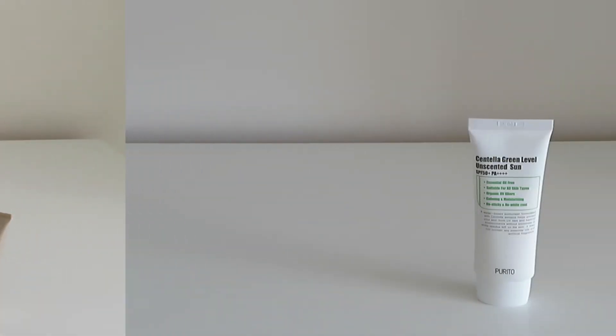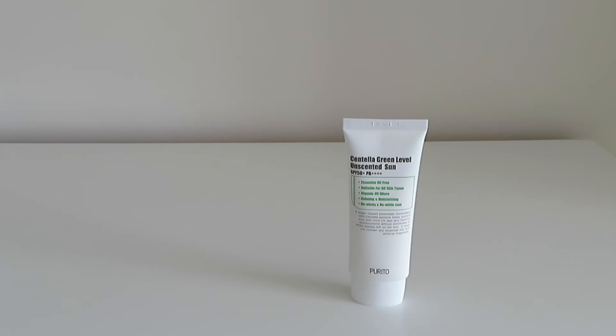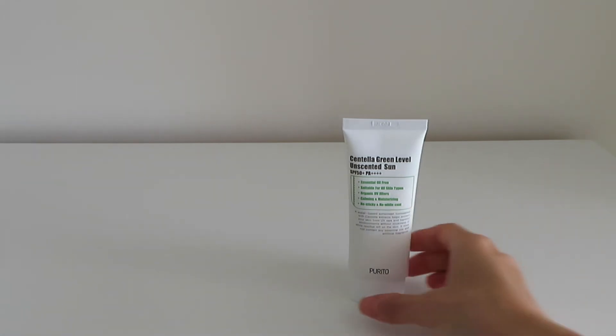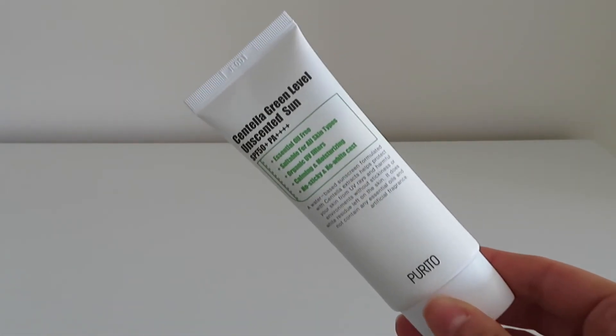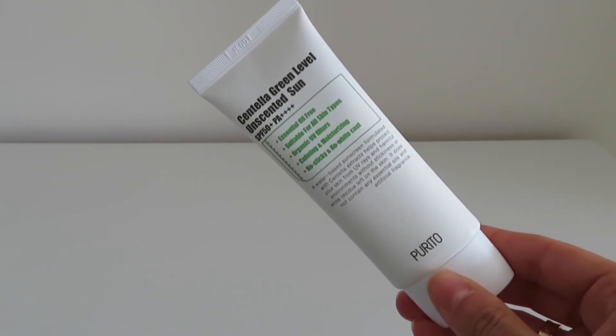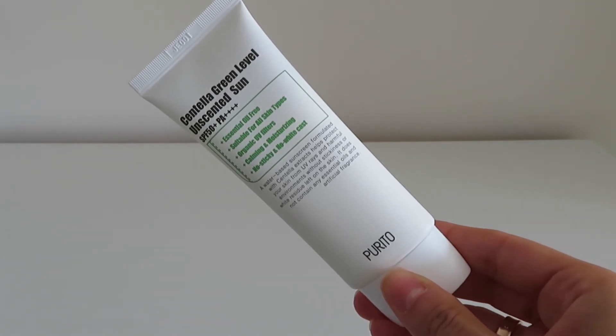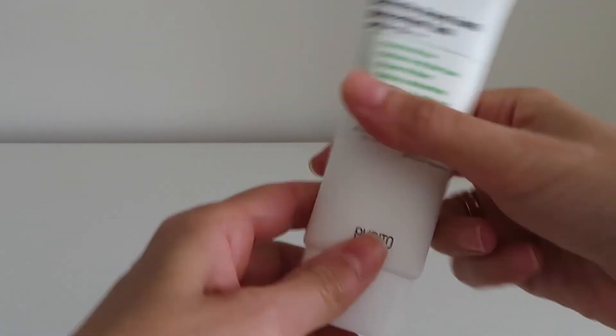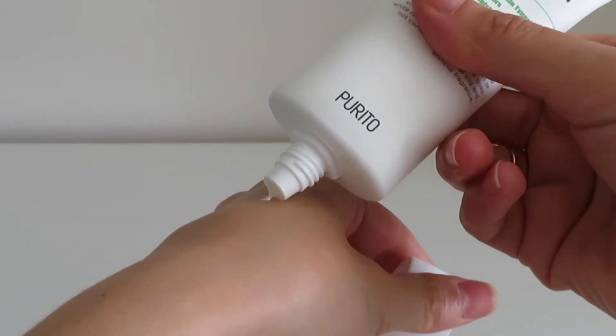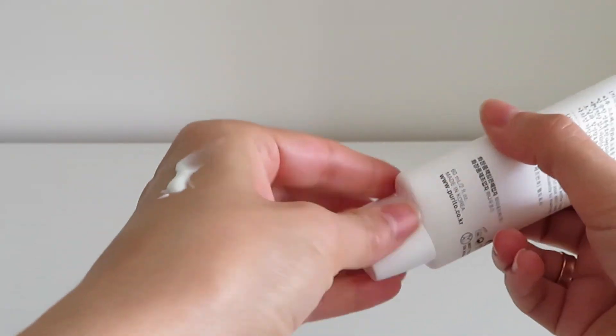And the last one is my favorite sunscreen. It's from Purito Centella Green Level Unscented Sun SPF 50. It's essential oil-free, suitable for all skin types, organic UV filters, calming and moisturizing, no sticky and no white cast.